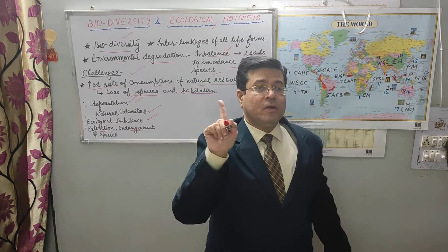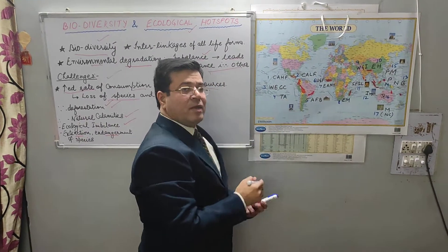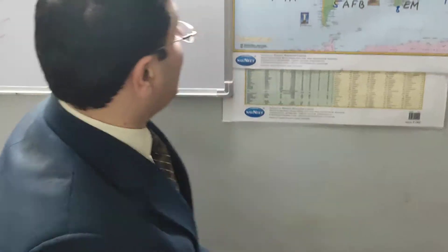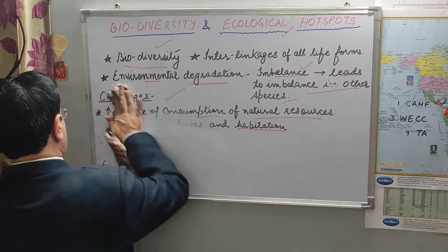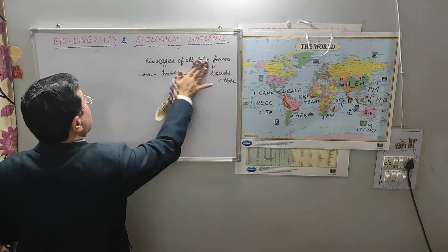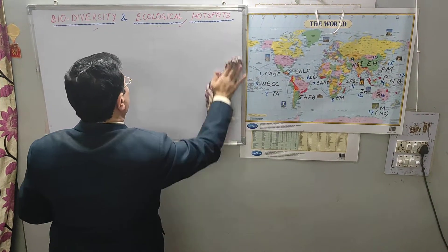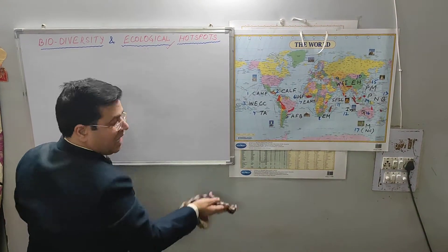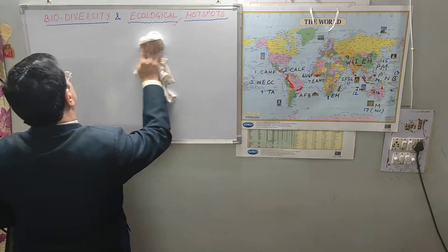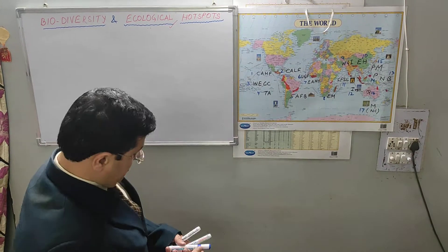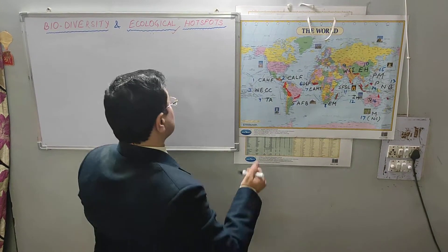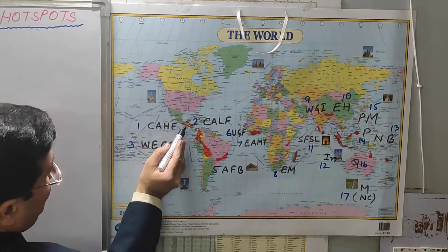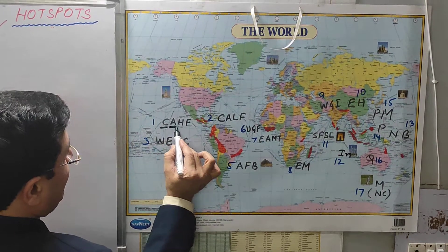Ecological hotspots. With the help of the world map, we will try to understand the areas in the whole world where we have dense forest, great biodiversity and ecological hotspots. It's very easy to understand. We know that areas with high rainfall are very favorable for the growth of vegetation, and in dense vegetation areas we have great biodiversity. This is North America continent, this is South America continent, and in between we have Central America. The western side of Central America is known as Central American Highland Forest.